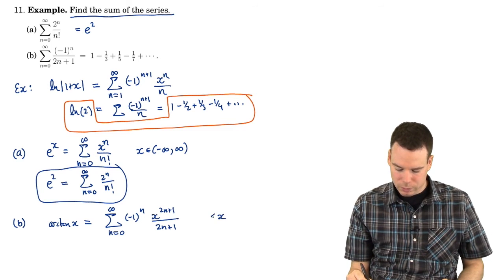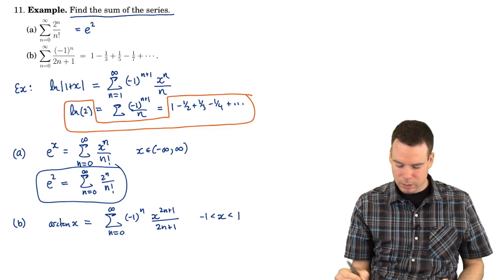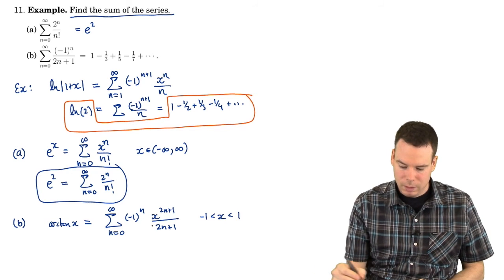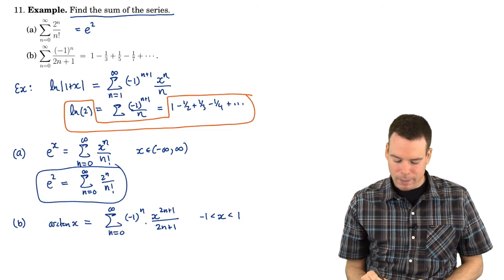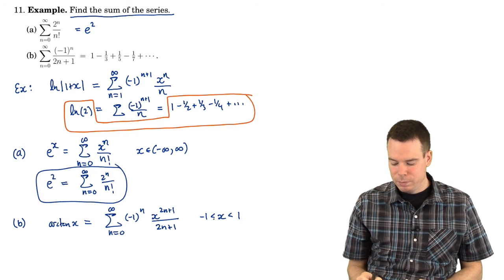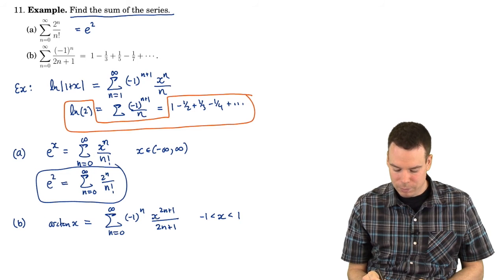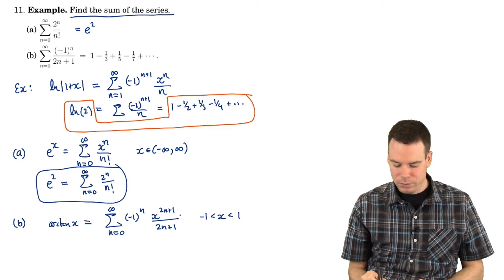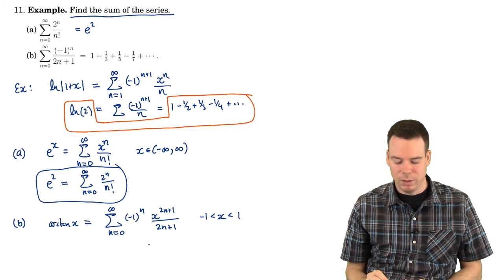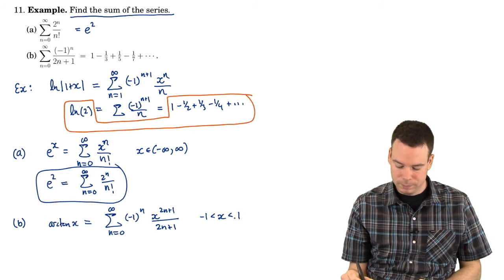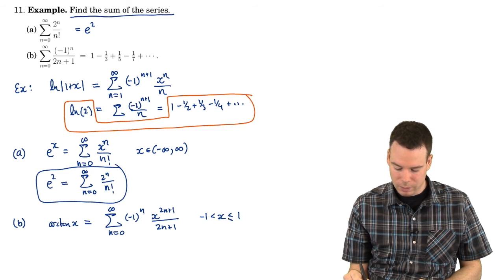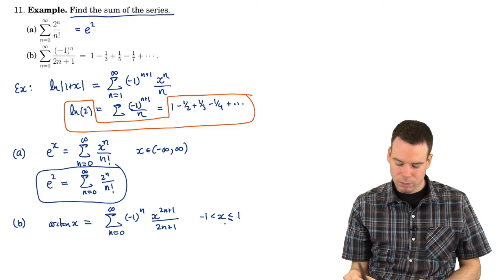Where does this hold? It holds for x between negative 1 and 1. Now, this is alternating so not only does it actually hold between negative 1 and 1 it actually holds at 1 as well because if I plug 1 into this expression this is an alternating series. It's negative 1 to the n over 2n plus 1. It's alternating, terms are going to 0, so we get equality here.